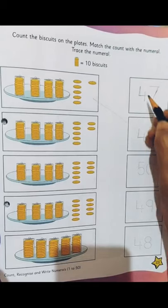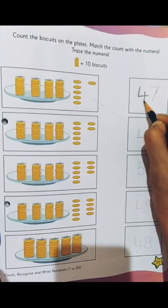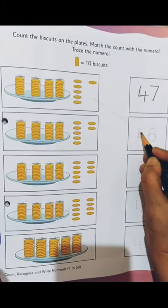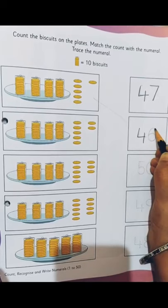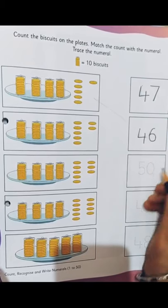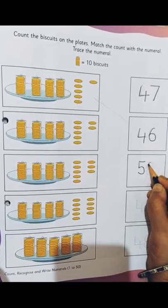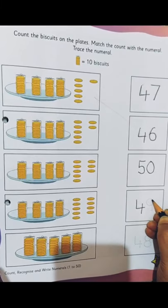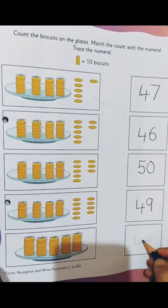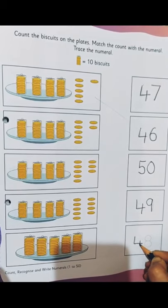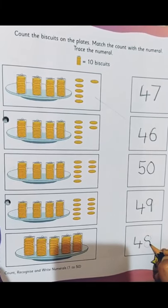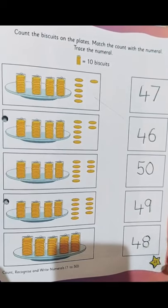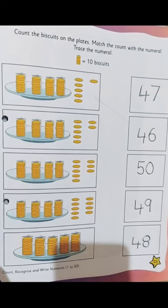Yes. 4, 7, 47. 4, 6, 46. 5, 0, 50. 4, 9, 49. And 4, 8, 48. Yes children. So we have these done.